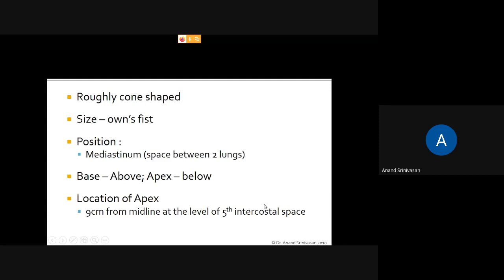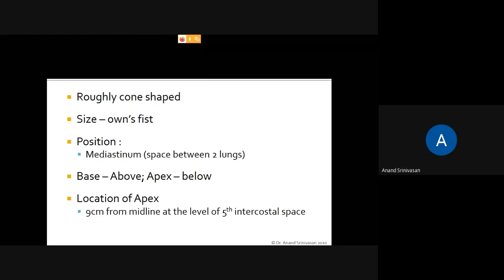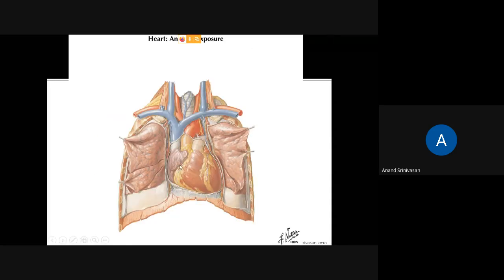The fifth intercostal space is the space between the fifth and sixth ribs. The first intercostal space is between the first and second ribs, second between second and third, third between third and fourth, fourth between fourth and fifth, and fifth between the fifth and sixth. This is the external feature of the heart.